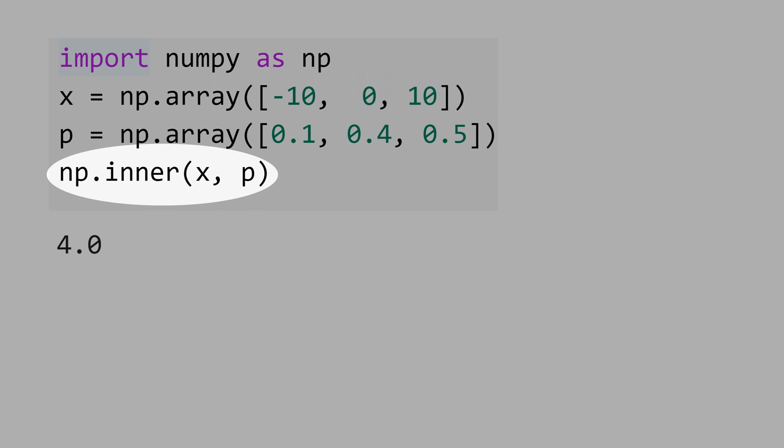Now, let's calculate the inner product between x and p, and you get 4. What we did is 10 times half, 5, and minus 10 times 0.1, minus 1, then you get 4,